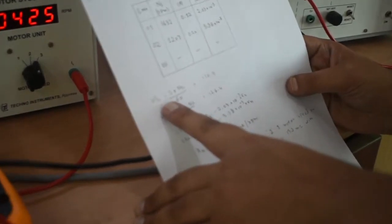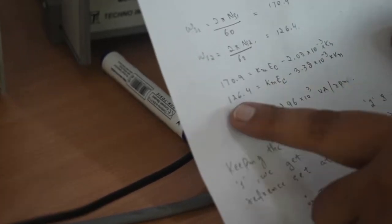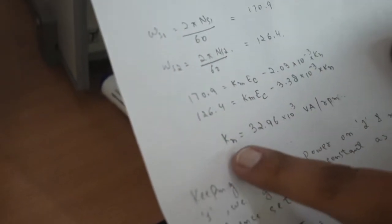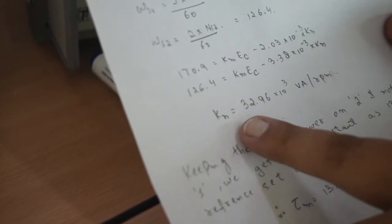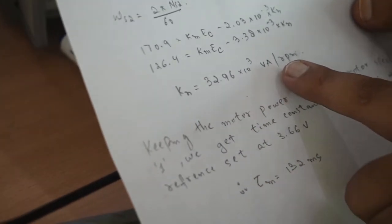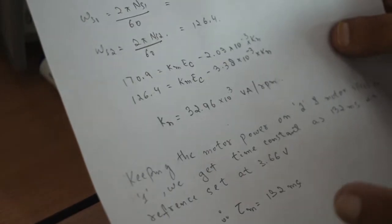Using omega = 2π·n / 60, substitute the load 1 and load 2 values into the two transfer function equations, compare them, and solve for KN. The result is approximately 32.96 × 10⁻³ volt-ampere per rpm.